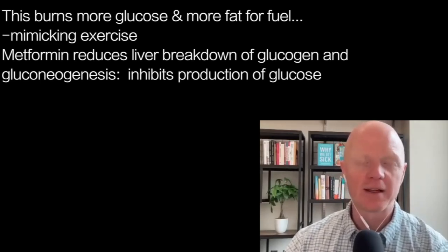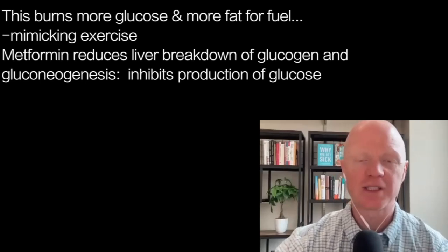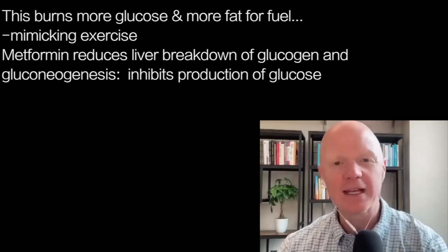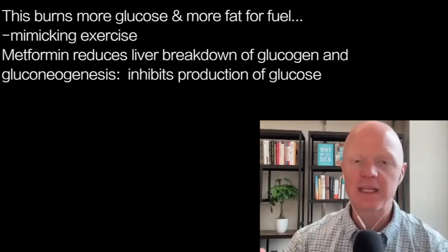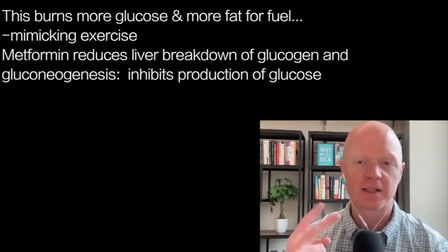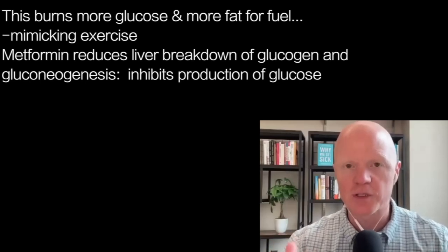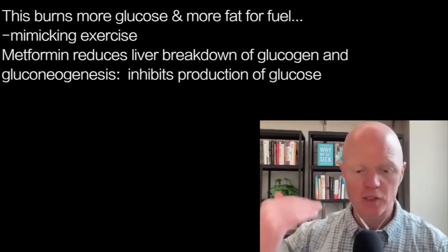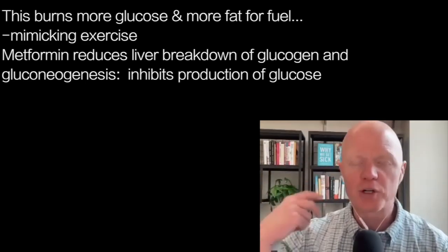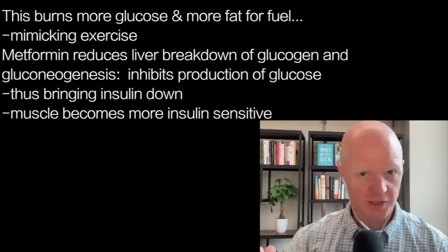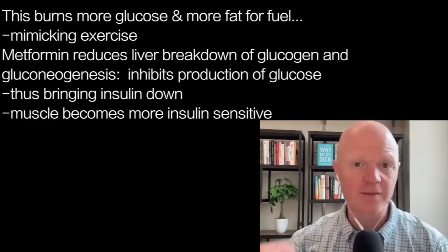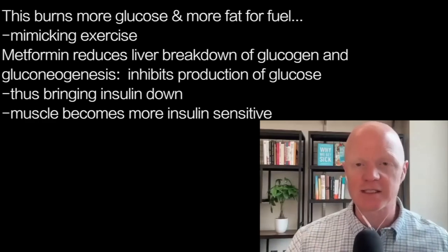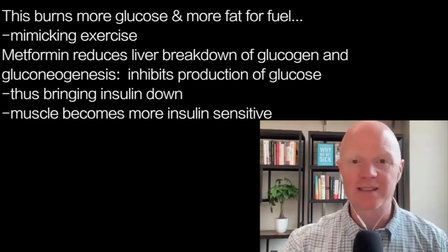Metformin is sometimes referred to as an exercise mimetic — a drug that can mimic the effects of exercise. It has two general well-documented effects: one is that it reduces the liver's production through glycogen breakdown and gluconeogenesis, so it slows or inhibits the liver's output of glucose, which reduces blood glucose levels and helps insulin come down. There's also evidence that muscle — which by mass is the main insulin-sensitive, insulin-dependent tissue in the body — becomes more insulin-sensitive directly.